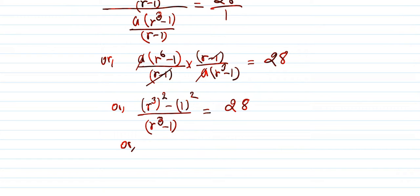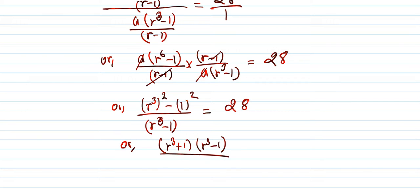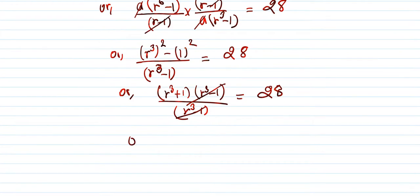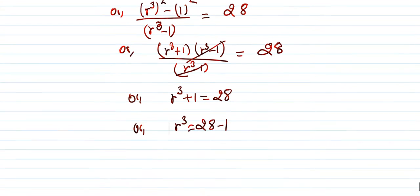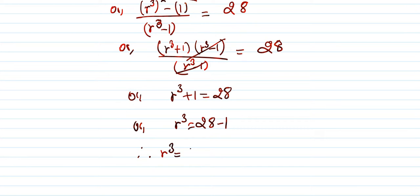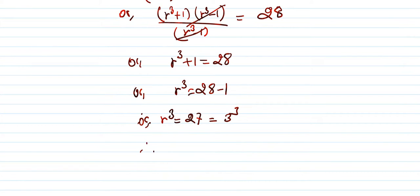Using the difference of squares formula a² - b² = (a + b)(a - b), we get (r³ + 1)(r³ - 1) / (r³ - 1) = 28. The (r³ - 1) cancels, giving r³ + 1 = 28, so r³ = 27.